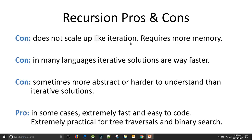And in many languages, iterative solutions are way faster, for loops. So some languages are just optimized for running for loops really fast, and they do that really well. But opening function calls, they do very slowly. And then another con is sometimes recursion is a little more abstract. It's harder to understand than iterative solutions, in some cases. So wrapping your head around the solution sometimes can be harder in recursive solutions.